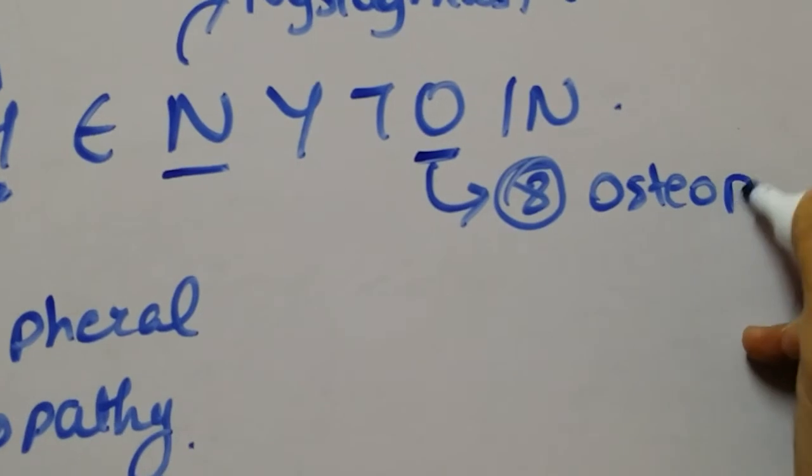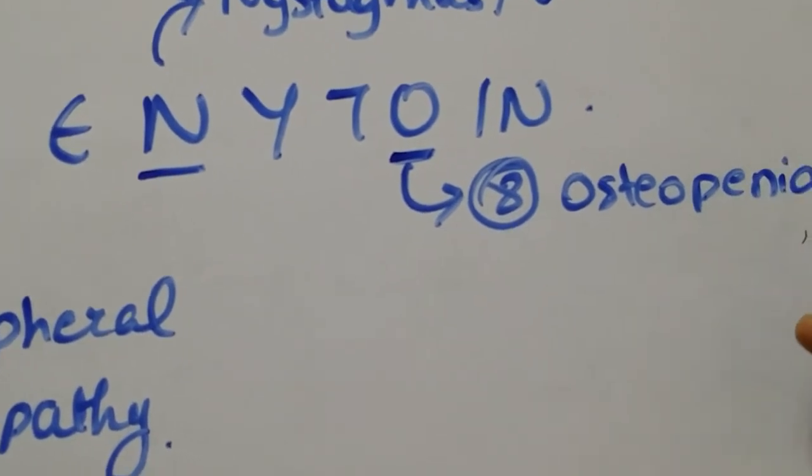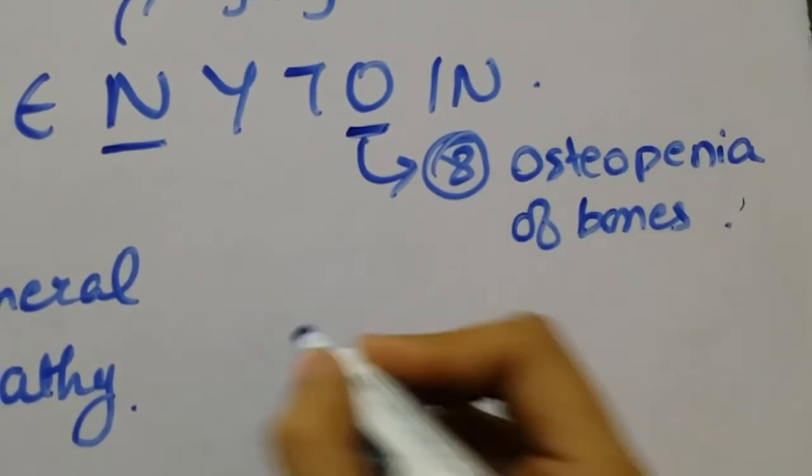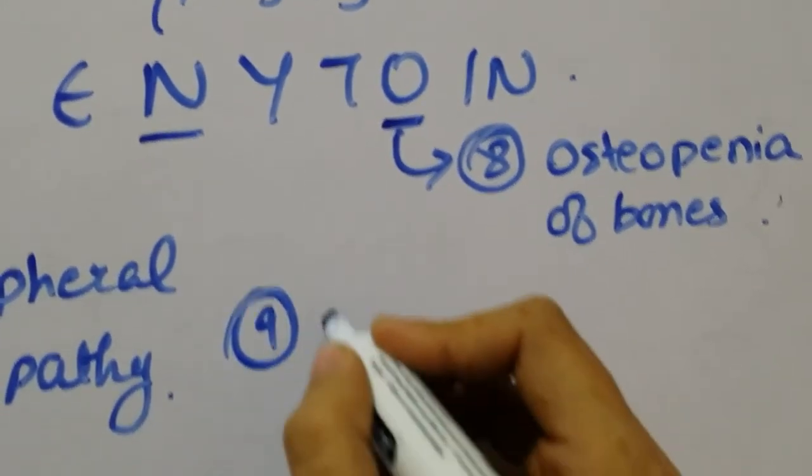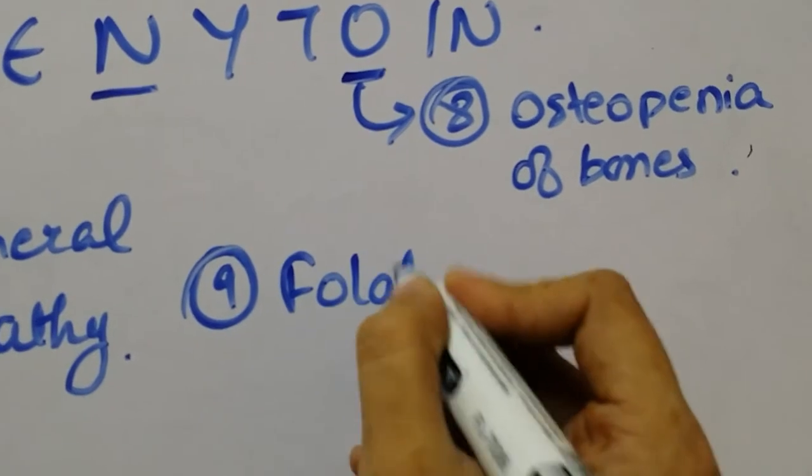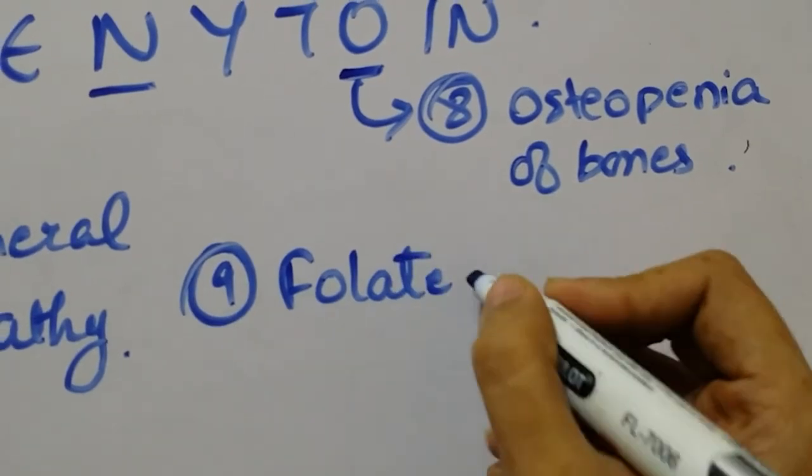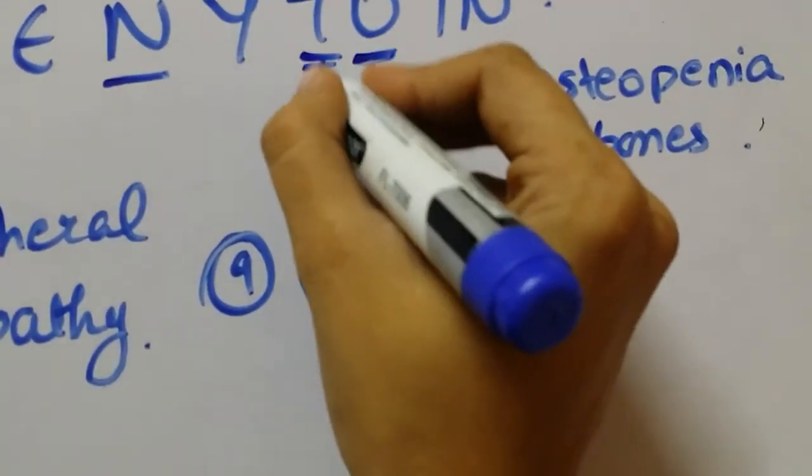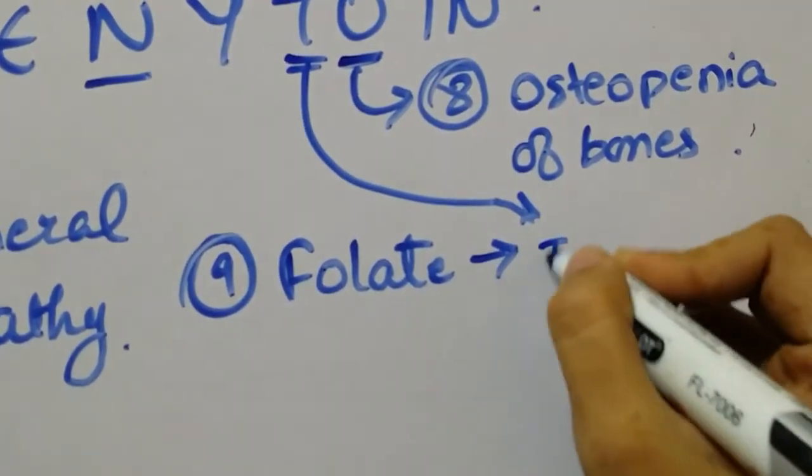It messes up with your calcium and vitamin D metabolism, causes weak bones. Point number nine is that it causes folate deficiency. It kind of interferes with the absorption of folate, which causes megaloblastic anemia. It is why phenytoin is teratogenic.